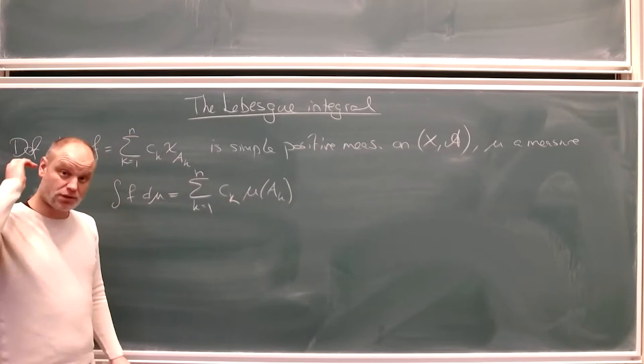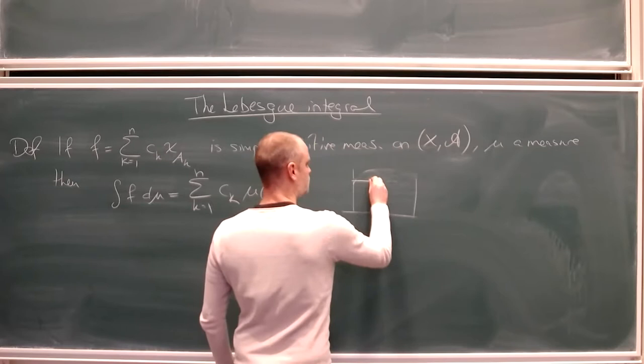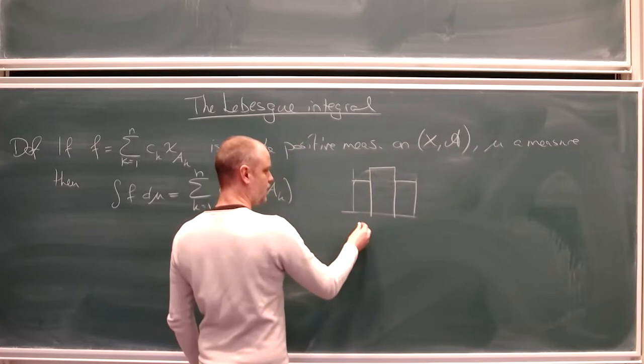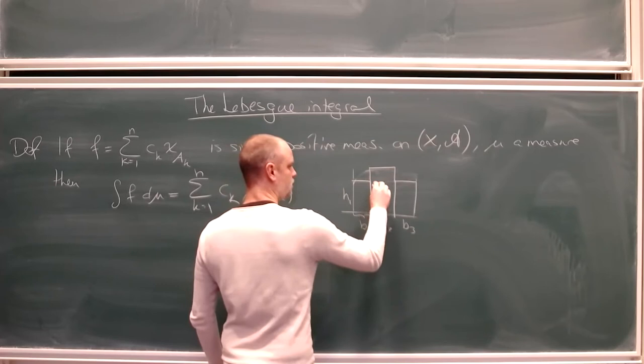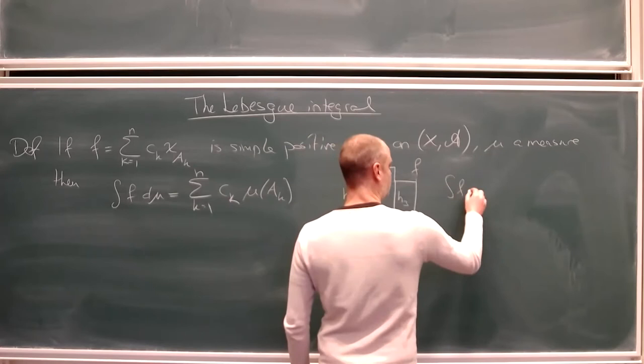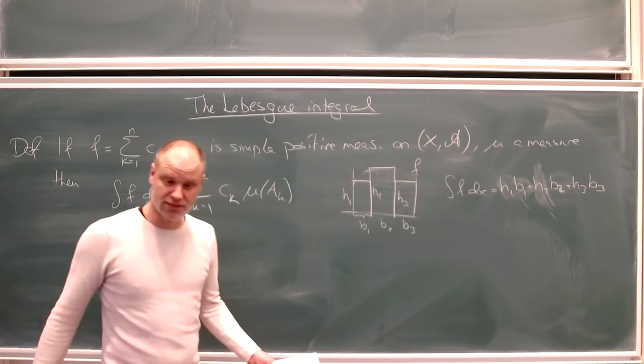And that shouldn't come as a surprise — we've been building up to this. We can visualize it: for the real Riemann integral with a step function, we take base 1, base 2, base 3, height 1, height 2, and height 3. The integral of f dx is the usual notation, giving d1·h1 plus d2·h2 plus d3·h3.